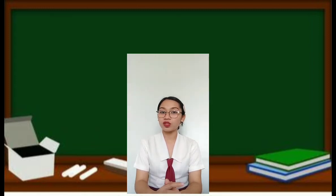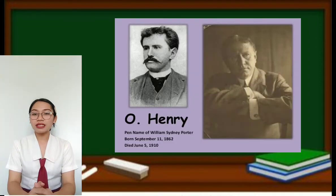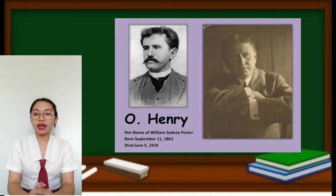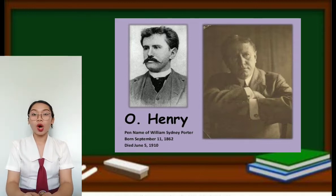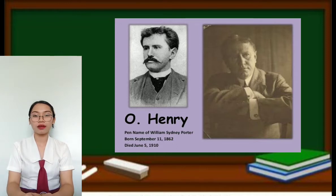But before we are going to read the story, let's find out more about the author. William Sidney Porter, known by his pseudonym O. Henry, was born on September 11, 1862 in North Carolina, U.S., and died on June 5, 1910 in New York. His stories express the effect of coincidence on character through humor, grim, or irony. In 1902, O. Henry arrived in New York, and from December 1903 to January 1906, he produced a story a week for the New York World, writing also for magazines.